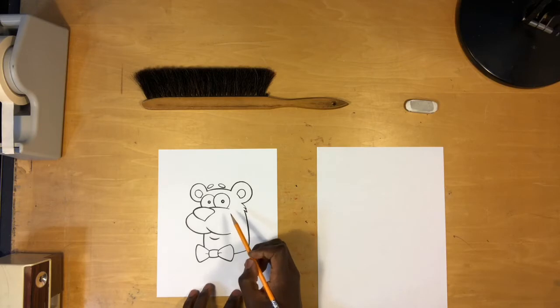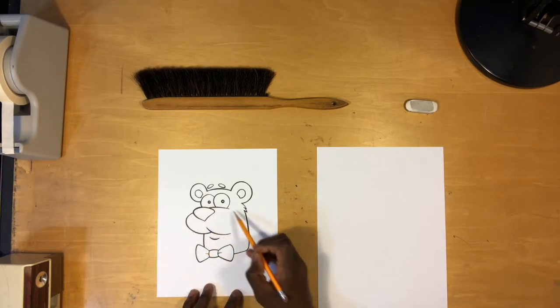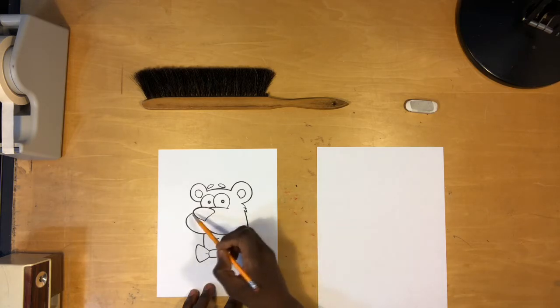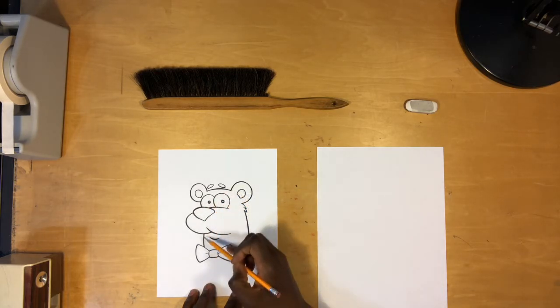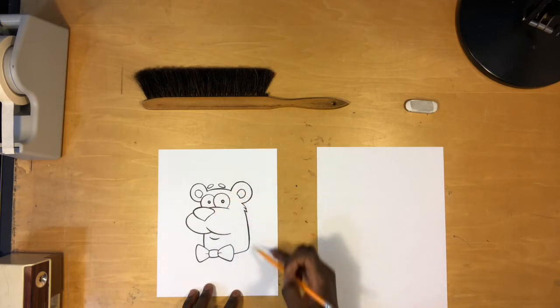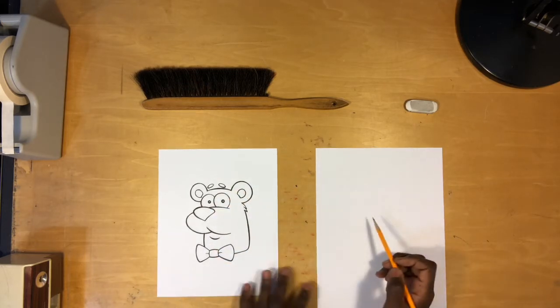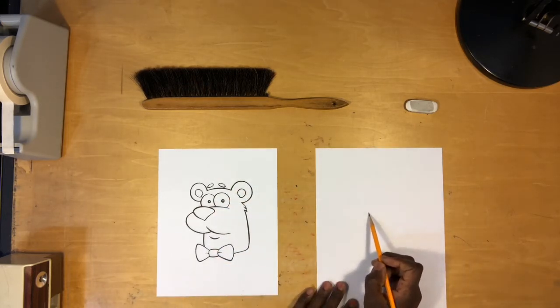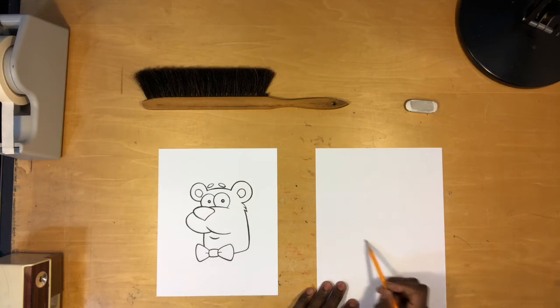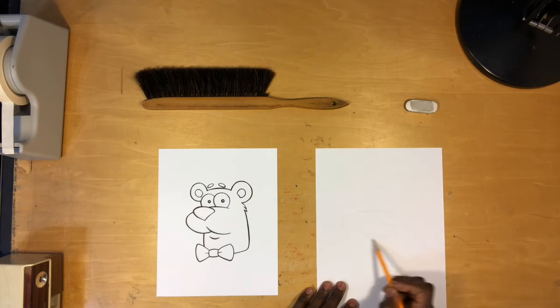As always, we want to start with the largest shapes and he has two large shapes. See this nice horizontal oval here and then also a bigger shape, the vertical bigger oval. We're going to start with the smaller one so let's draw this oval which is going to become a snout.